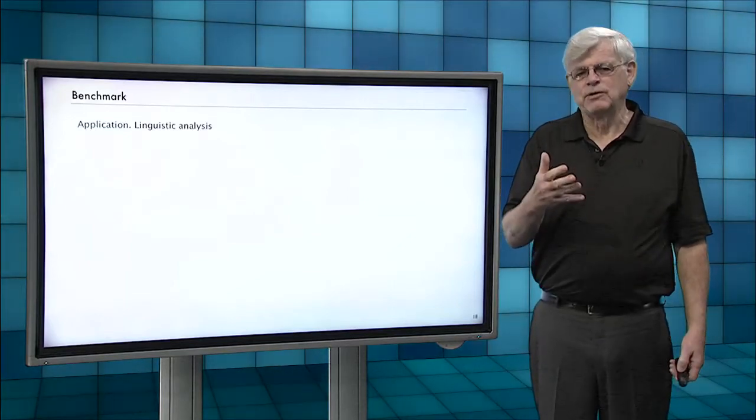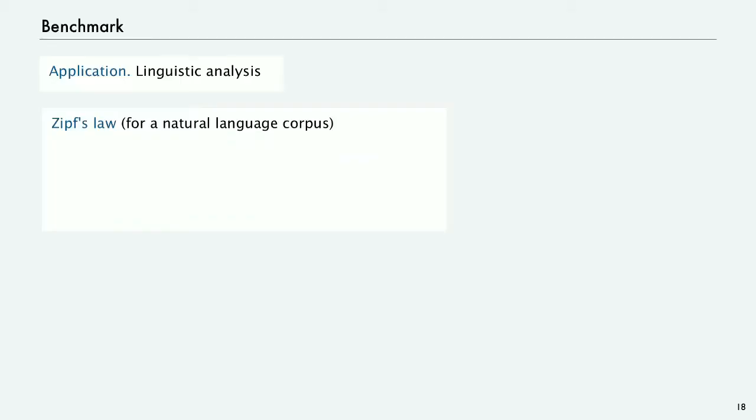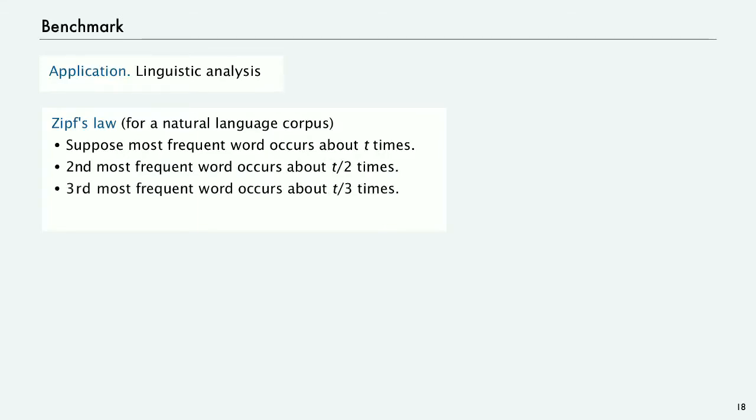Just as an example, let's look at a benchmark application: linguistic analysis. There's a thing called Zipf's Law for a natural language corpus or huge text. This theory states that if the most frequent word occurs about t times in that text, then the second most frequent occurs about t/2 times, the third about t/3, and so forth.